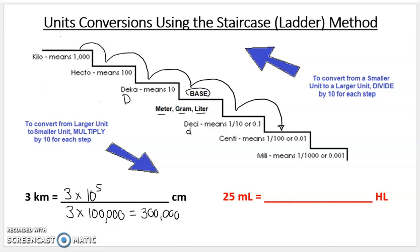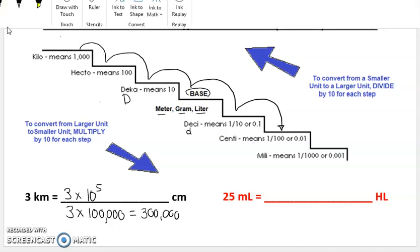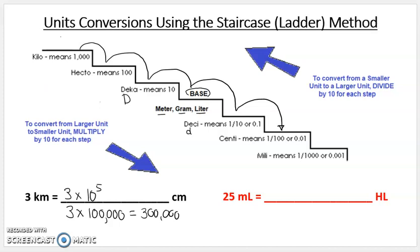The other example goes from a smaller unit to a larger unit. And this one is liquid measure, 25 milliliters to how many hectoliters, 25 milliliters equal to how many hectoliters?